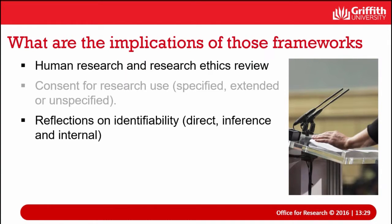You need to consider the degree to which information is identifiable — whether individuals are directly identifiable or could be identified by inference. In social science research, there's increasing reflection on what's called 'internal identification': for example, describing a research ethics bureaucrat who uses a wheelchair, is in his forties, and is losing his hair — without naming him — but people within that sphere will know who you mean. Sometimes internal identification can be more problematic than general population identification.